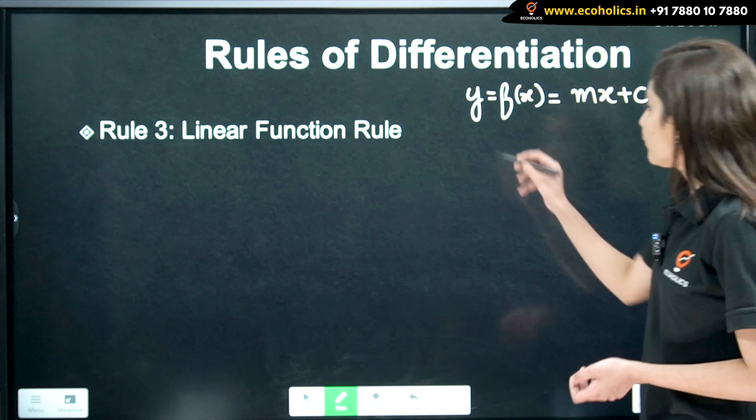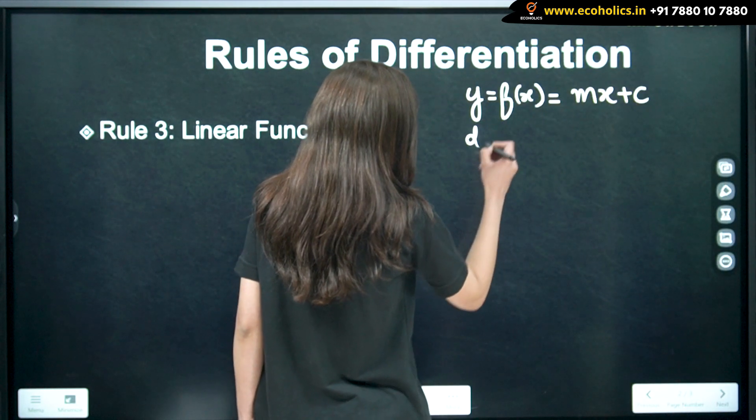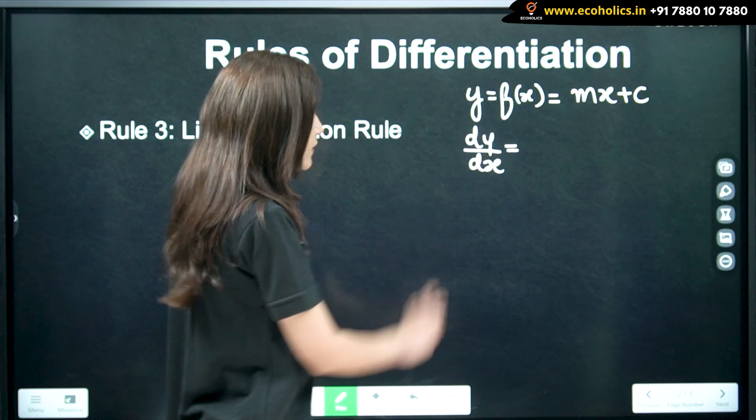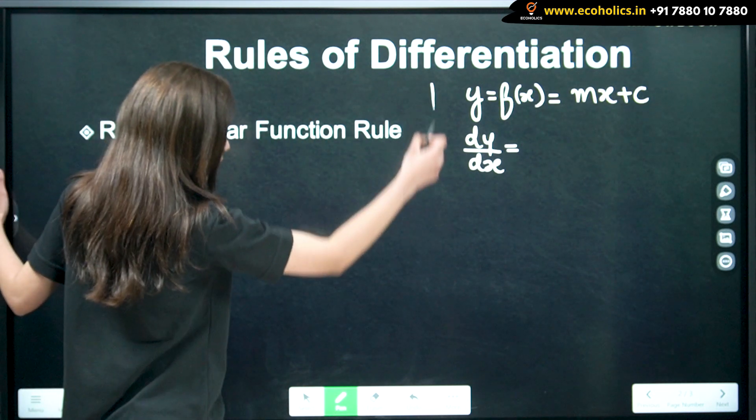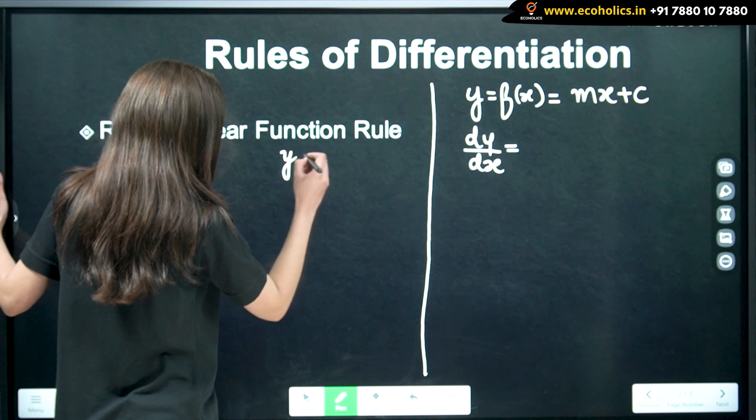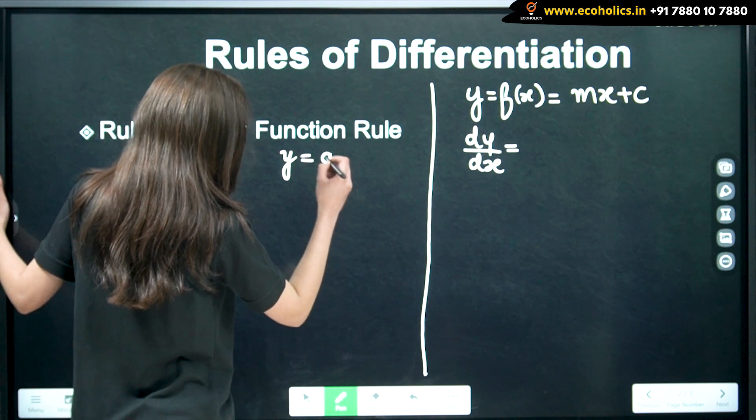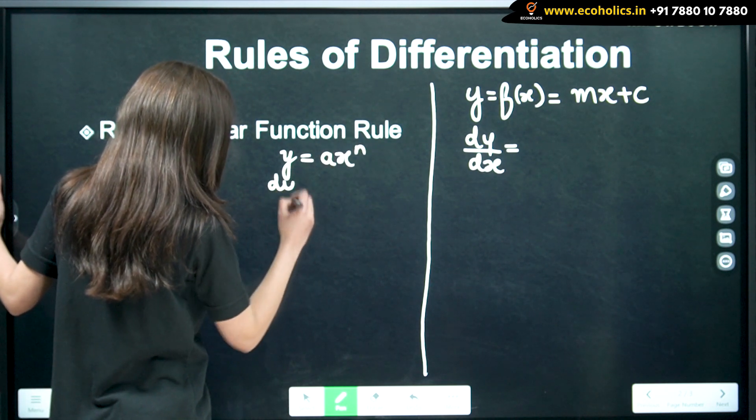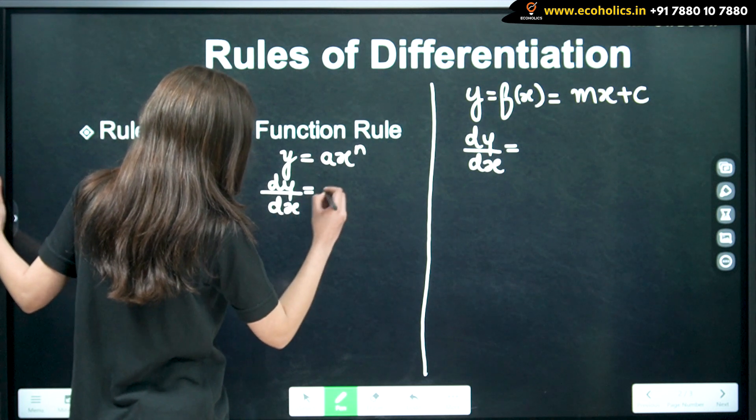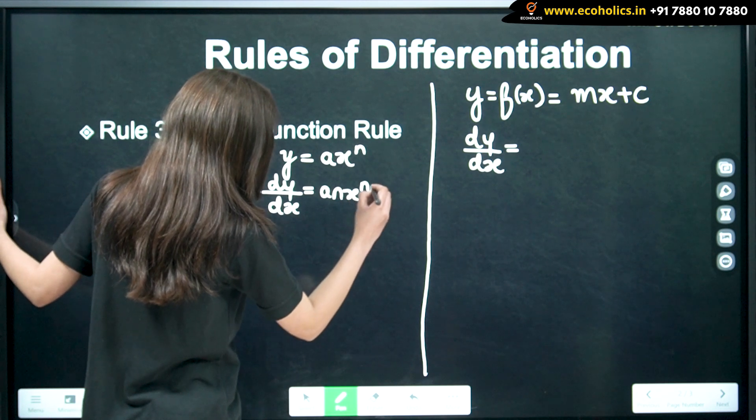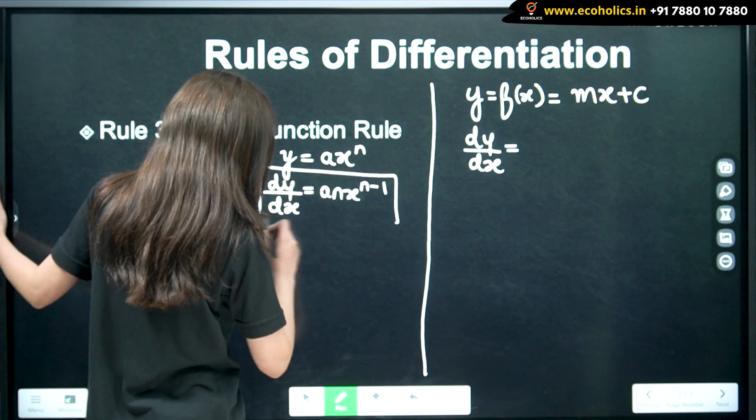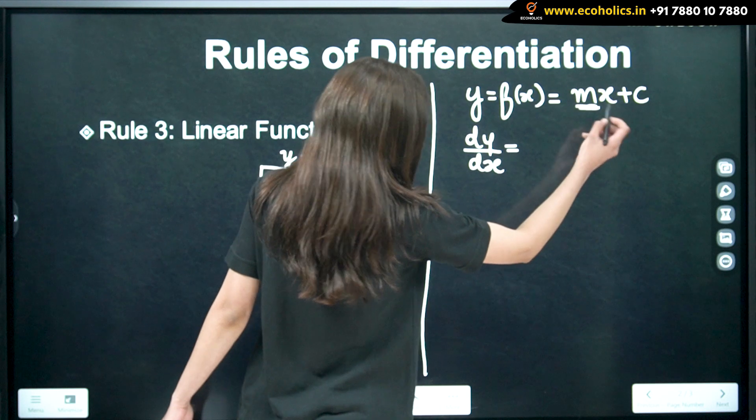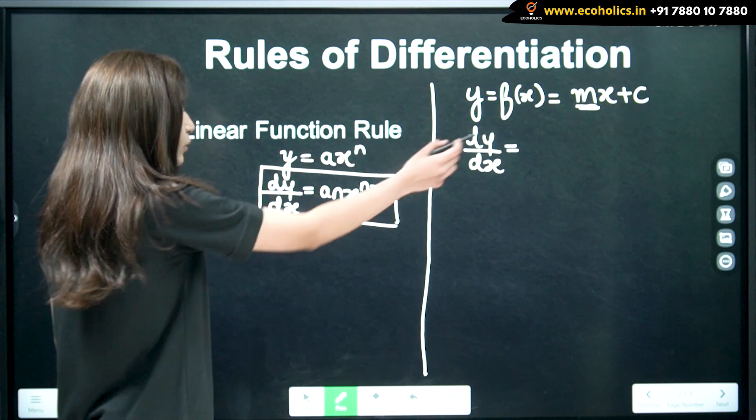Now, the derivative for this is dy by dx is equal to... In our previous rule, we have seen that when we have a product of a constant term and a function, differentiation in that case is equal to a nx raised to n minus 1. So, this is a formula. Similarly, here also we have constant as m and x is a function.